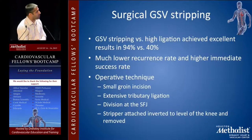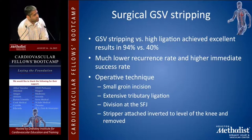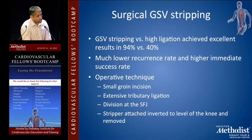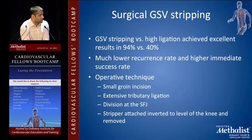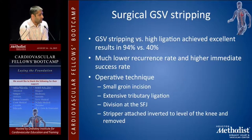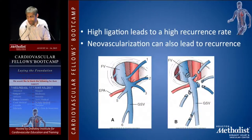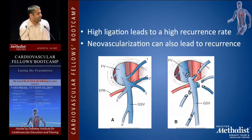Saphenous vein stripping: stripping versus high ligation received excellent results in 94% versus 40% with high ligation, giving a much lower recurrence rate and higher immediate success rate. The operative technique involves a small groin incision, extensive tributary ligation, dividing the saphenofemoral junction, attaching a stripper, inverting to the level of the knee, and then removing the vein. High ligation leads to a high recurrence rate.